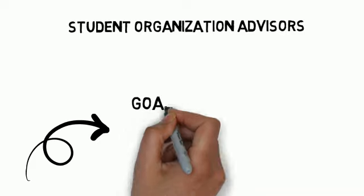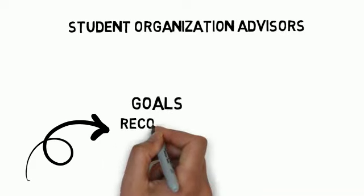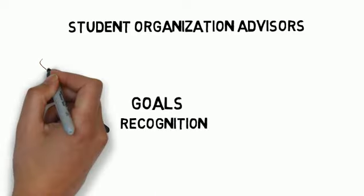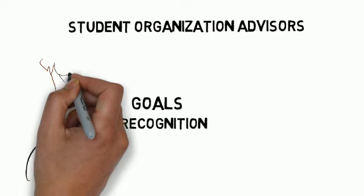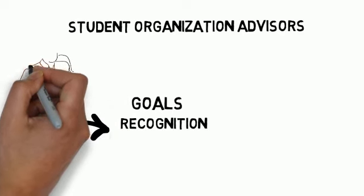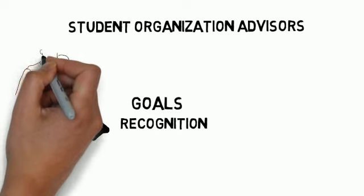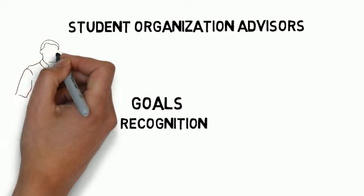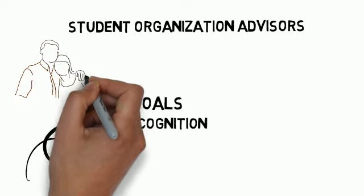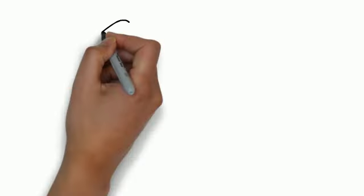Other implications for student organization advisors include programming of an organization. Millennials may have big dreams and are uncomfortable with failure. Teamwork committees are preferred rather than individual responsibilities. In order to progress, set clear goals and expectations. Recognition can go a long way. Parents probably won't be involved with their student organization involvement, but be aware that that is a possibility.